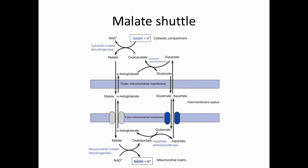As you can see in the picture, oxaloacetate in the cytosol must be transported into the mitochondria. Oxaloacetate first converts into malate, and that malate goes into the mitochondria with a special transporter. To get oxaloacetate back out, it converts into aspartate, which travels to the cytosol via a special transporter, and that aspartate converts back into oxaloacetate.